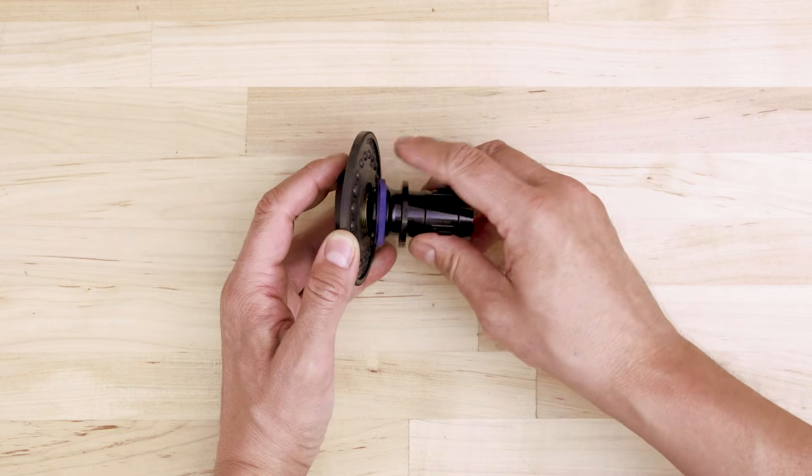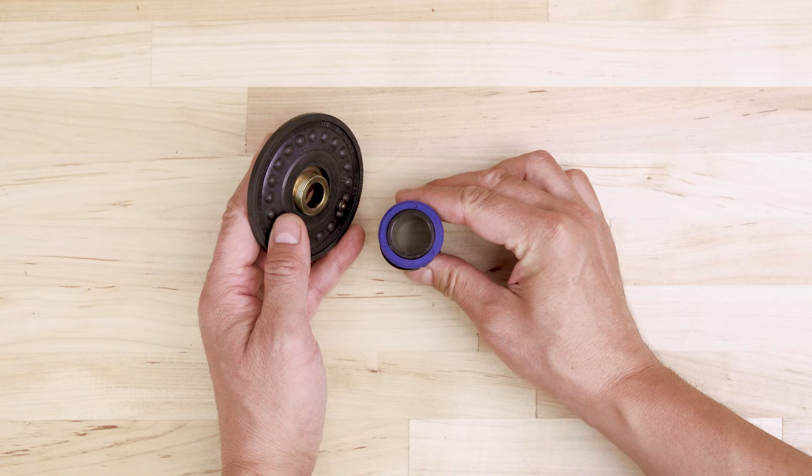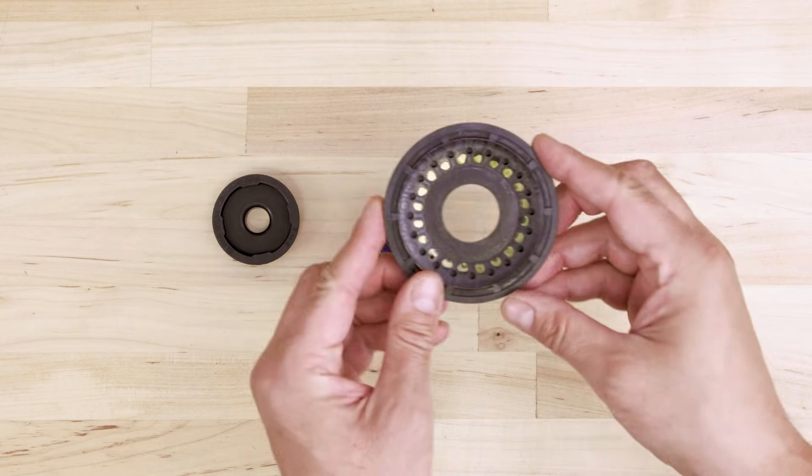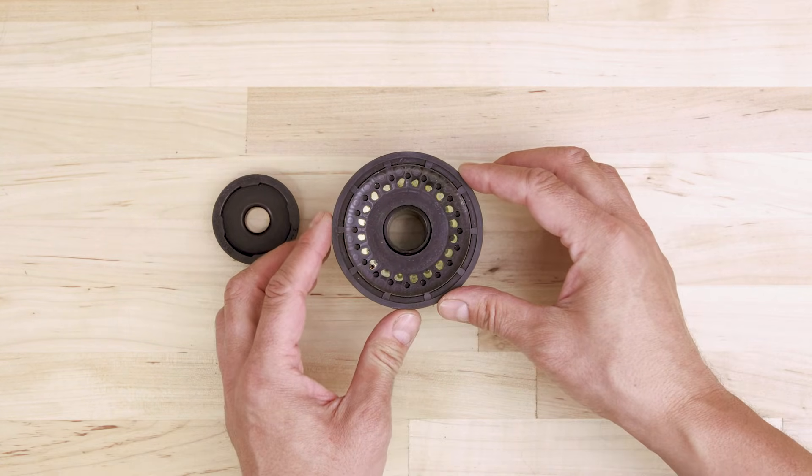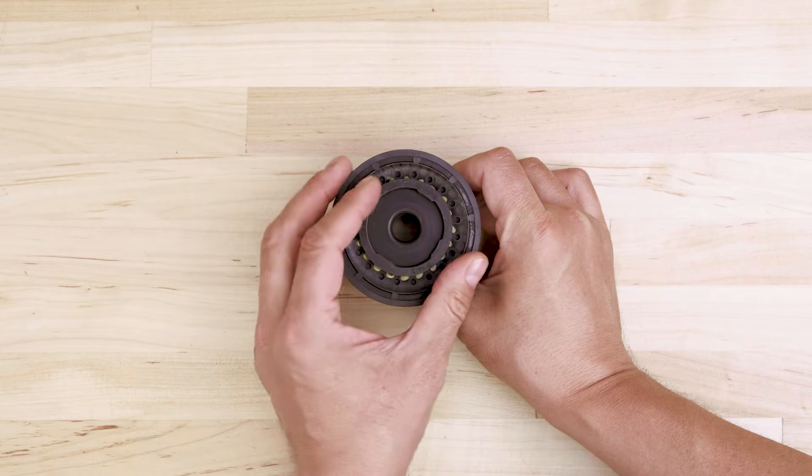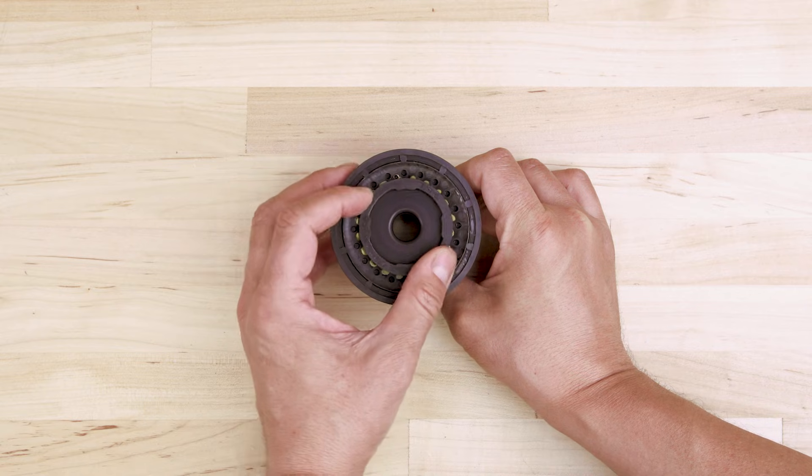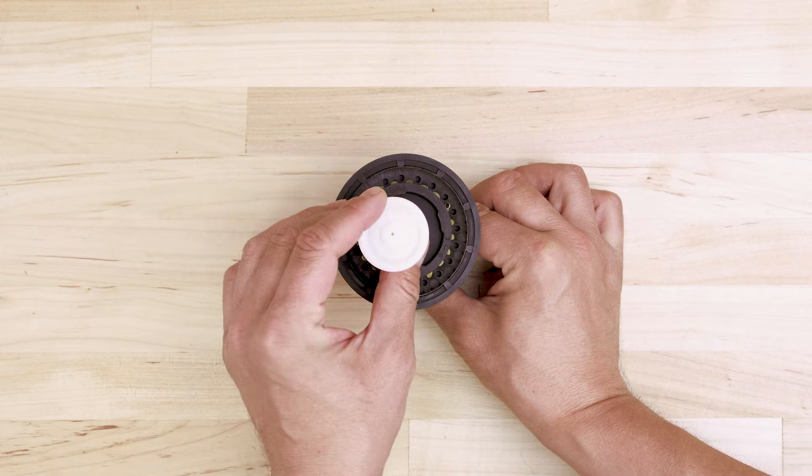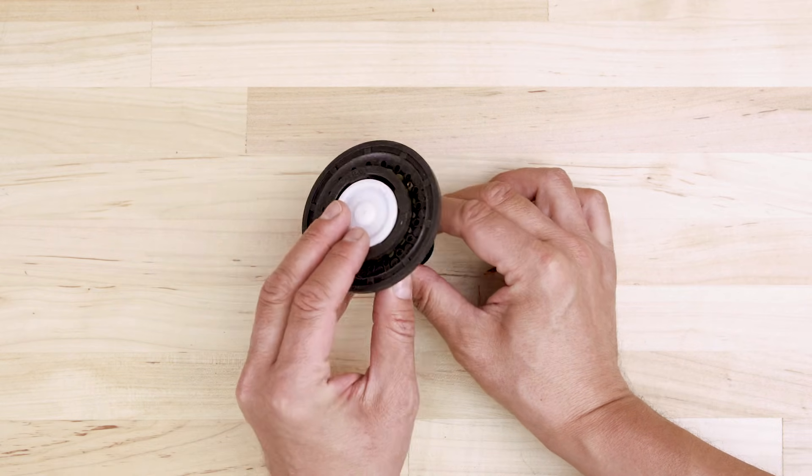Next, unscrew the guide assembly and discard the old diaphragm. Place the new diaphragm over the guide. The side marked 'this side down' should not be visible. Next, hand tighten the disc to secure the assembly. Now set the relief valve over top.